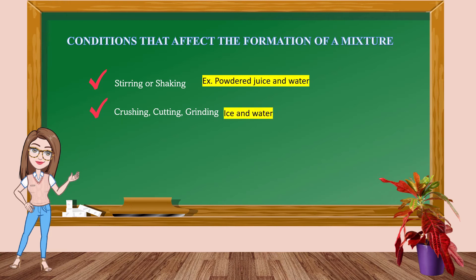For example, ice and water. Third is heat energy — an increase in temperature will result in faster movement of particles. When this happens, the possibility of contact between the solute and solvent increases, resulting in faster dissolution of the solute in a given solvent. For example, powdered milk and water.